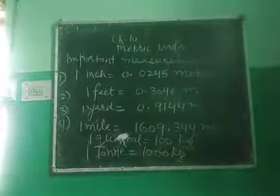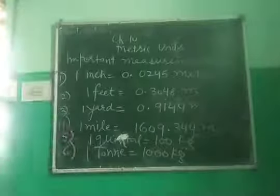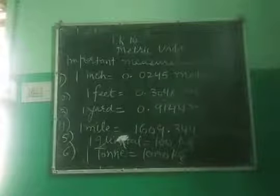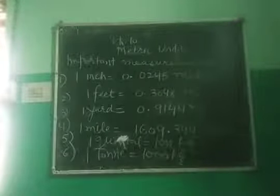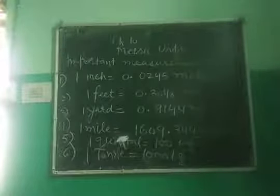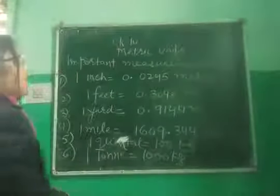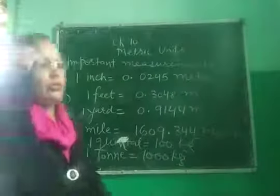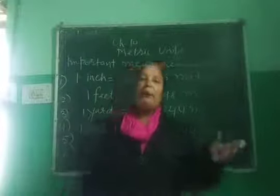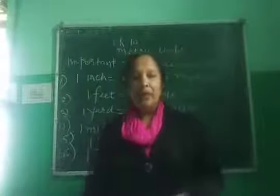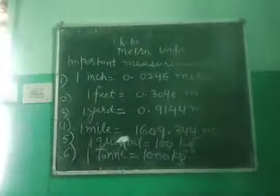Try to note down and learn these measurements. You can do your practice zone from your book — Discovering Maths, chapter 10, Metric Units. When smaller unit is being converted into bigger unit, you divide. When bigger unit is being converted into smaller unit, we multiply. Do practice zone 1.